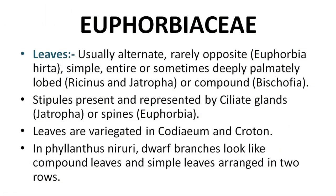Leaves: usually alternate, rarely opposite — opposite leaves are seen in Euphorbia hirta. Simple leaves, and sometimes deeply palmately lobed — palmately lobed leaves are seen in Ricinus communis. Compound leaves are also present. Stipules are present and represented by ciliate glands and spines in Euphorbia.